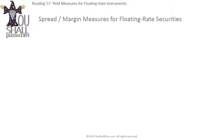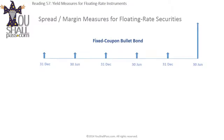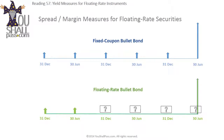Before we talk about yield measures for floating rate instruments, let's talk about what floating rate instruments are. So far we've met various types of bonds, but all of them had fixed coupons — you knew what the coupon cash flows were going to be throughout the life of the bond. With floating rate bonds you cannot do that; you cannot be sure what the coupon is going to be a year or two years from now. At best you know what the next coupon is going to be, since when a coupon is paid the rate for the next coupon is also set, but beyond that you don't really know.